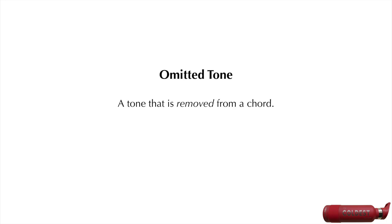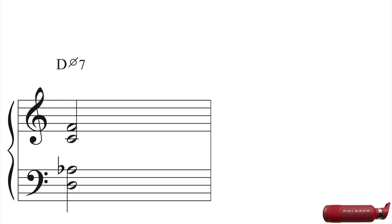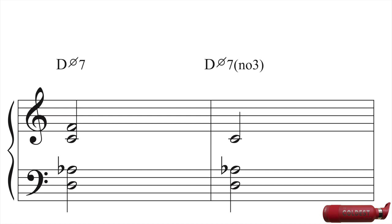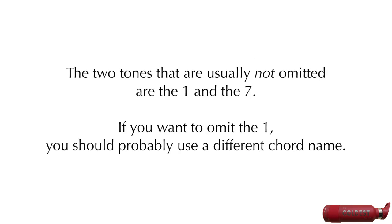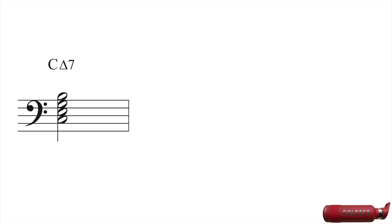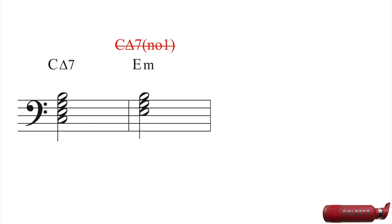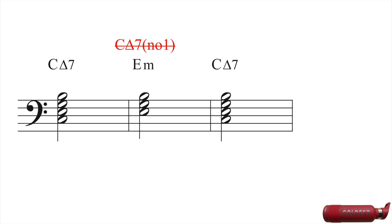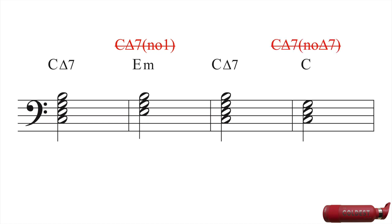An omitted tone is a tone that is removed from a chord. For example, take the chord D half diminished 7. If we remove the 3, we have D half diminished 7, no 3. The two tones that are usually not omitted are the 1 and the 7. If you want to omit the 1, you should probably use a different chord name. For example, if you have C major 7 and you omit the 1, it's probably better to call it an E minor triad. Similarly, if you have C major 7 and you omit the 7, you end up with a chord that is just not a 7th chord, so you should call it something different — the label C major 7 no major 7 is just a bad name for a C major triad.